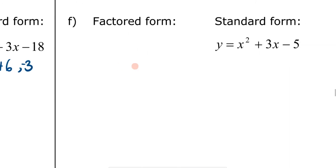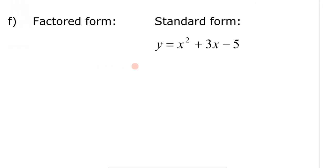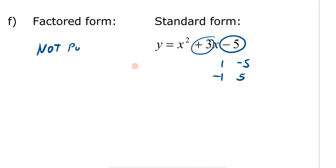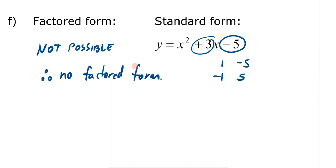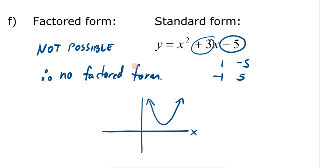For the next part, you might encounter a situation where looking at factors of negative 5 — which are 1 and negative 5, or negative 1 and positive 5 — none of these combinations add up to positive 3. In this case, it's not possible to find a factored form, so we write: no factored form. That's possible because a factored form gives us the x-intercepts. If a parabola doesn't cross the x-axis, there are no x-intercepts and no factored form exists.